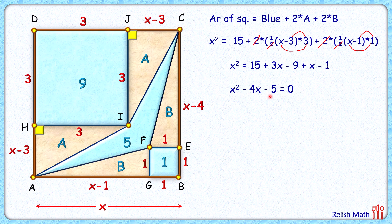Solving by splitting the middle term: minus 4 splits as minus 5 and plus 1. Factorizing, we get (x minus 5) times (x plus 1) equals 0. So either x is 5 or x is negative 1, but x can't be negative. So x is 5 centimeters and area of the brown square is 5 squared, or 25 centimeters square.